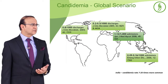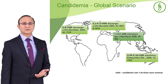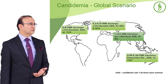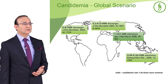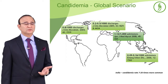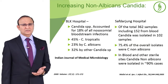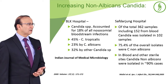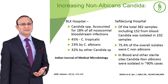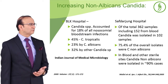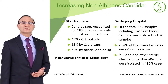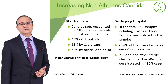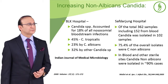India has the distinction of having the largest number of patients with candidemia among admissions. As you can see, Indian candidemia rates are 7 to 20 times more common compared to other parts of the world. A study done in Delhi from one hospital found that Candida species accounted for 18 percent of all nosocomial bloodstream infections — 45 percent was Candida tropicalis, 23 percent Candida albicans, and 32 percent other Candida species.